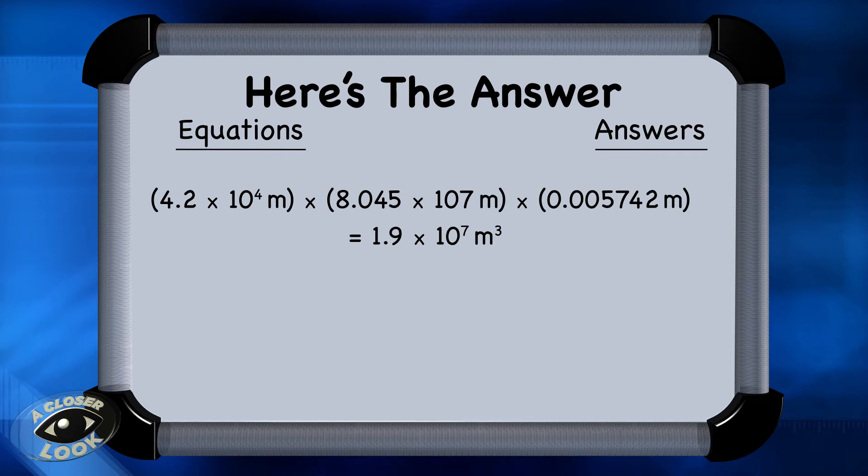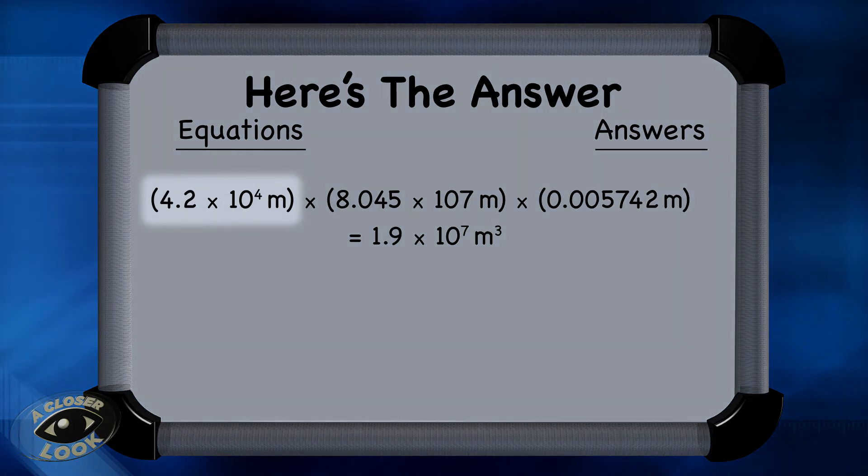Question 4 is a multiplication problem that has some scientific notation. Remember, whatever comes before the times 10 to the exponent, whatever number is in front of that time symbol, that's the number of sig figs in that problem. So in this one, 4.2 times 10 to the fourth is a 2 sig fig value. That's the smallest of the starting values. And so the final answer was rounded to 2 sig figs, 1.9 times 10 to the seventh meters cubed.